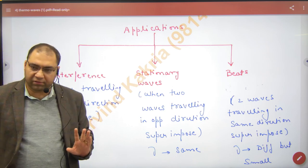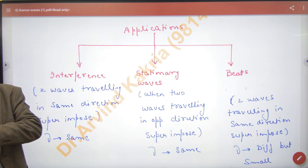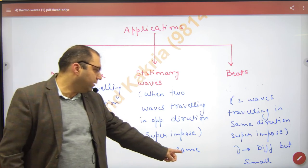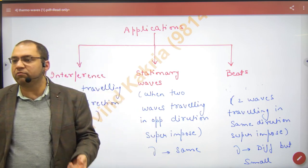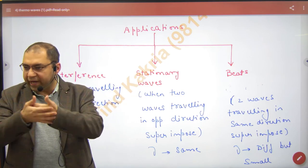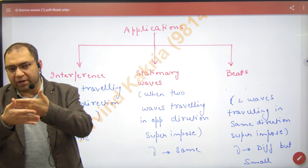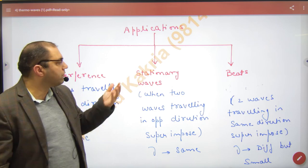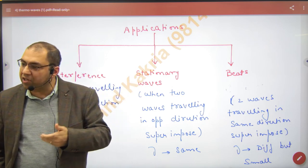Next is stationary waves. Two identical waves which are the same, but they overlap while traveling in opposite directions. So opposite direction - they enter and meet - what is the new wave? Standing or stationary waves.